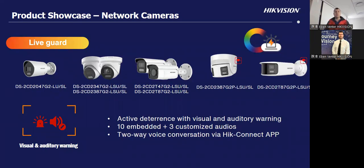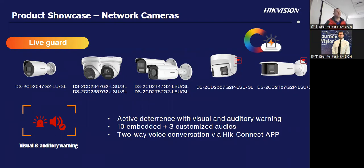It gives you that capability, plus two-way communication through the eConnect app. You can also have it connected to your phone. For example, we've got one in our lounge area — if the kids don't answer their WhatsApp, I go on the app and yell at them through the camera. It gives us the capability to talk to them and say 'answer your phone.' For any parent, that's a real bonus.